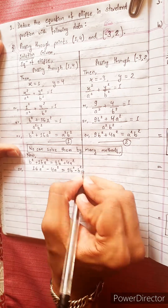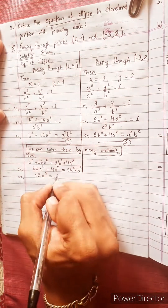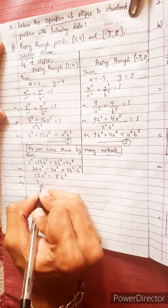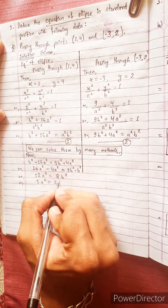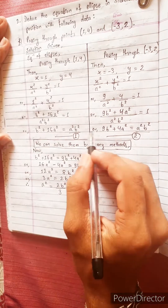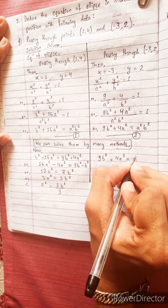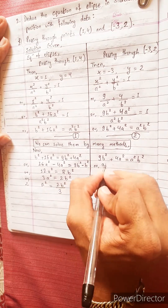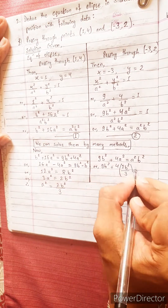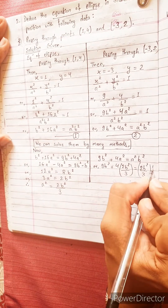We get 12a² = 8b², which simplifies to 3a² = 4b², so b² equals 3a² / 4, or equivalently a² = 4b² / 3.